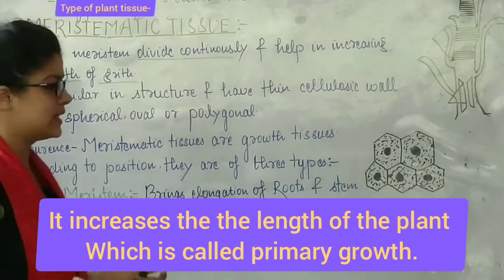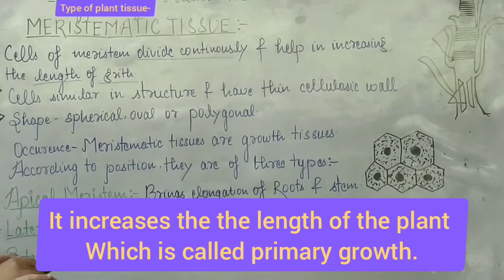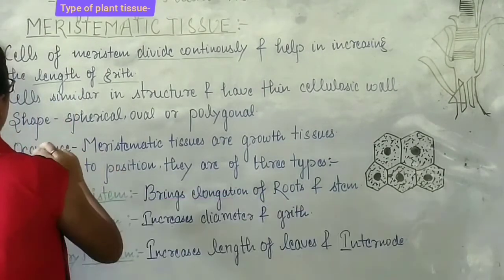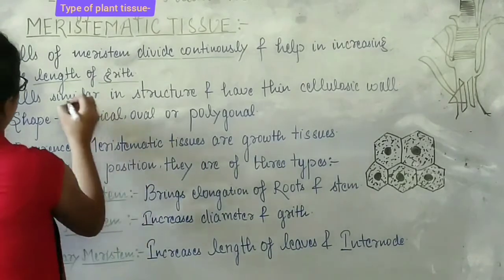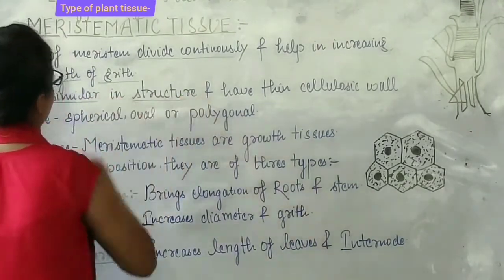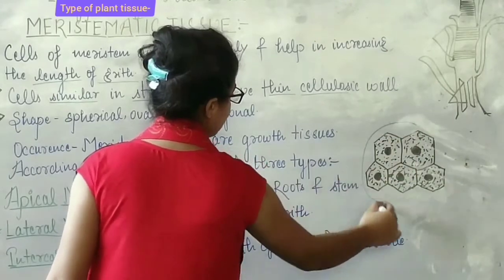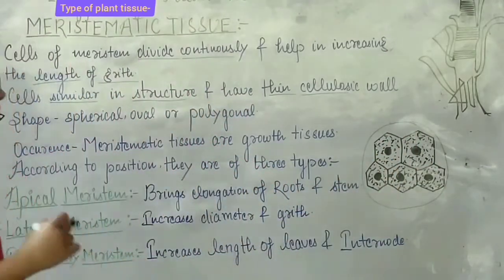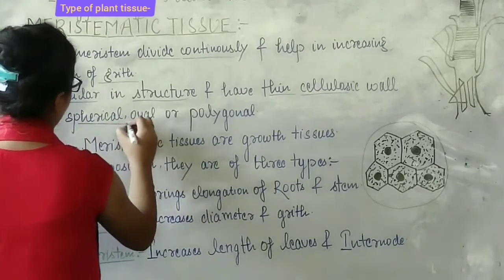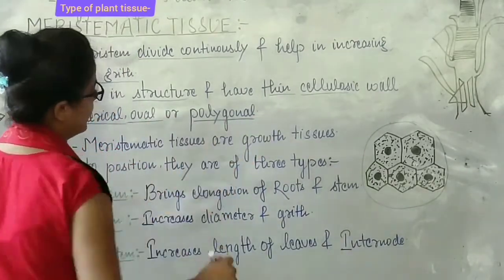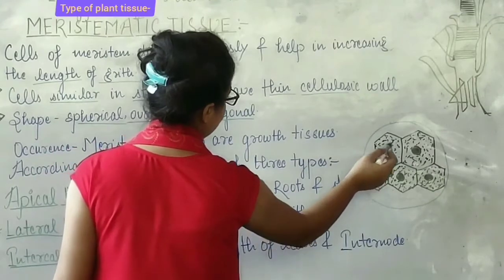Meristematic tissue helps in producing fruits, flowers, and in growing leaves and branches. The cells are similar in structure and have a thin cellulosic wall. The shape of the cells can be spherical, oval, or polygonal. These cells contain a nucleus and cytoplasm.